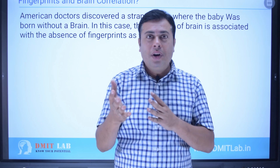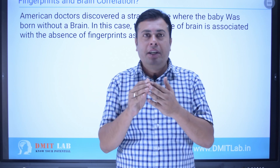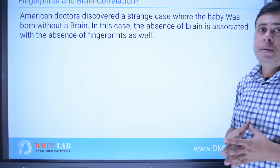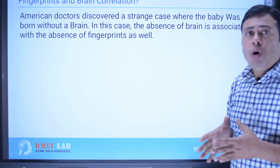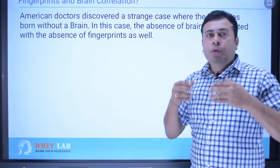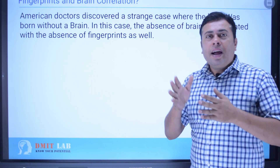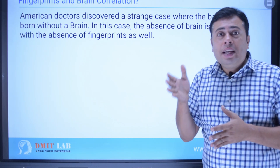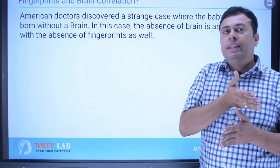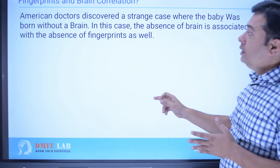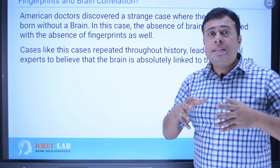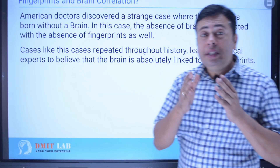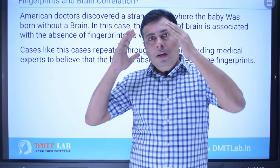There was an incident that happened — that is what the doctors got to know that there is a fingerprint and brain correlation. Doctors discovered some strange cases in their practices: a baby was born without a brain. When a baby is born without a brain, there are some developmental changes. They did research on that — when there is no brain development, what else is affected? They found something very interesting: when there is no development of the brain, there was also an absence of fingerprints.